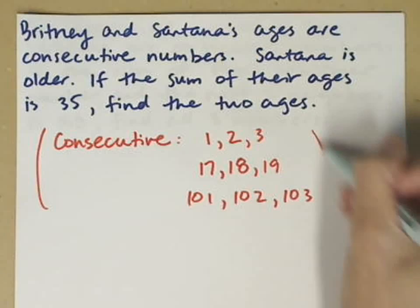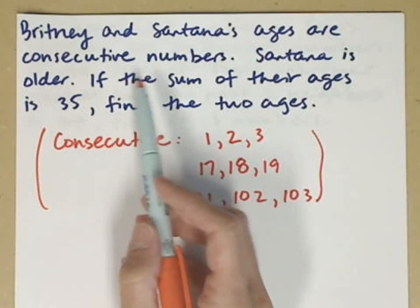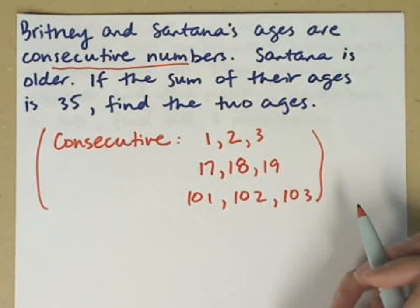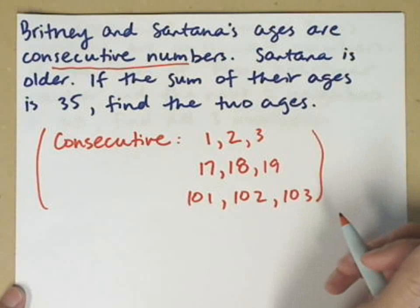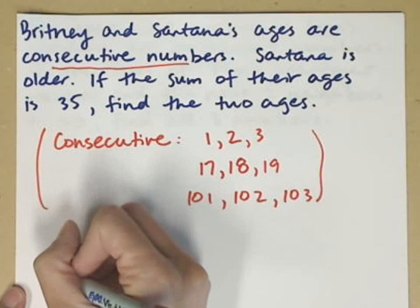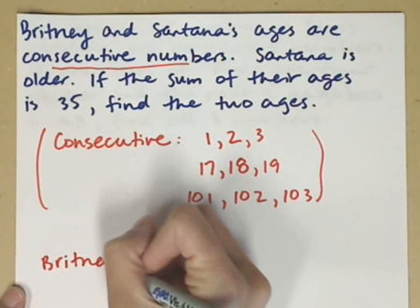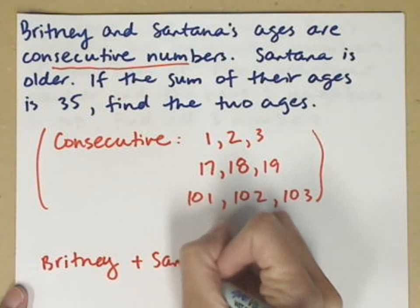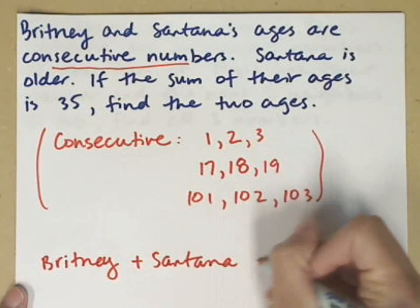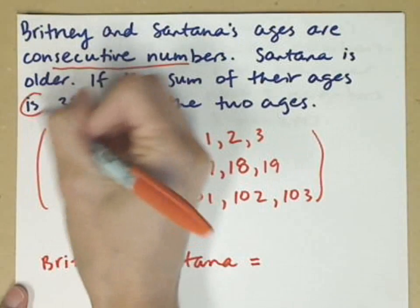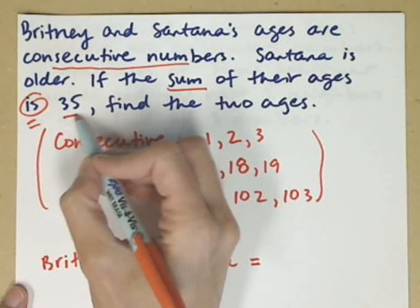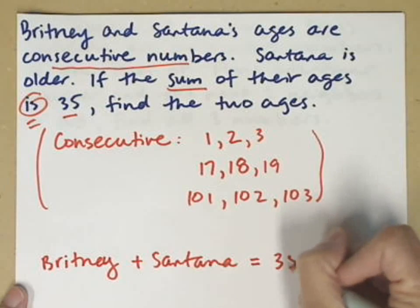Okay, so now let's take a look at our problem. It says that their ages are consecutive numbers, so we know that they're one year apart. Santana is older. If the sum of their ages is 35, find the two ages. So we can say, kind of stepping this into some algebra, we can say the sum of Brittney's age plus Santana's age is equal to, so that's my equal sign. So the sum is 35, equal to 35.